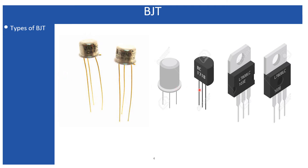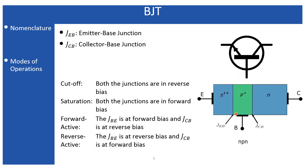These are a few examples of physical bipolar transistors available in the market. The junction between the emitter and base is called the emitter-base junction, and the junction between the collector and base is called the collector-base junction. We consider four modes of operation for the BJT. The first is cutoff, where both junctions are in reverse bias, resulting in only a small reverse saturation current due to minority carriers. The second is the saturation region, where both junctions are in forward bias.